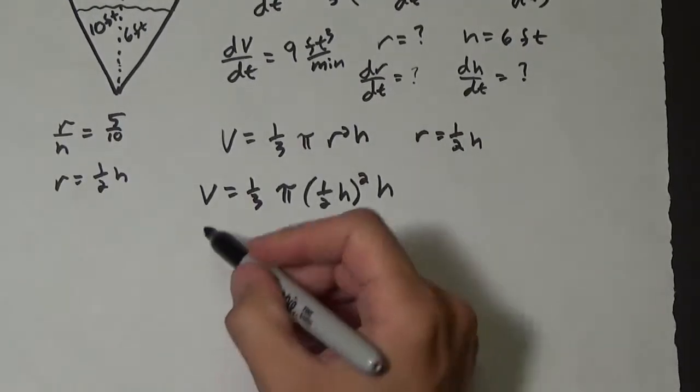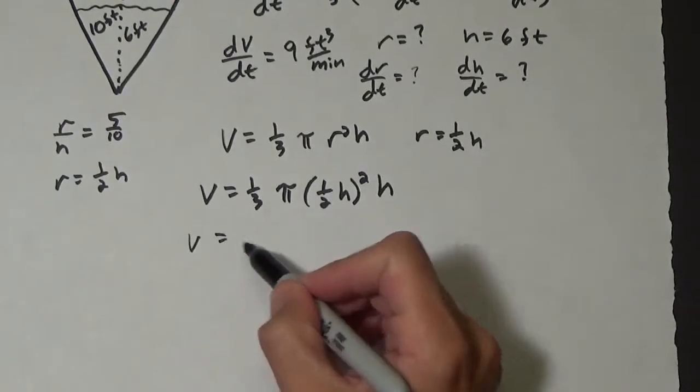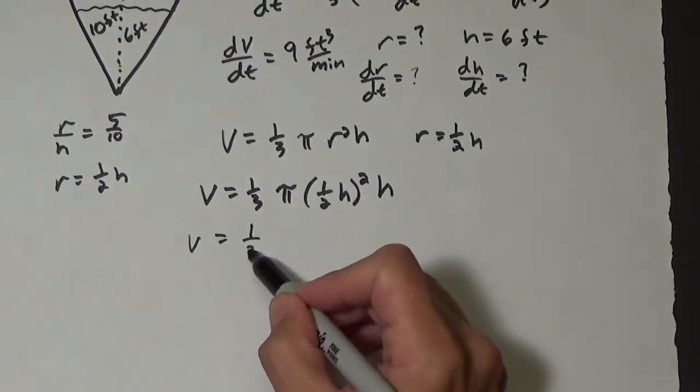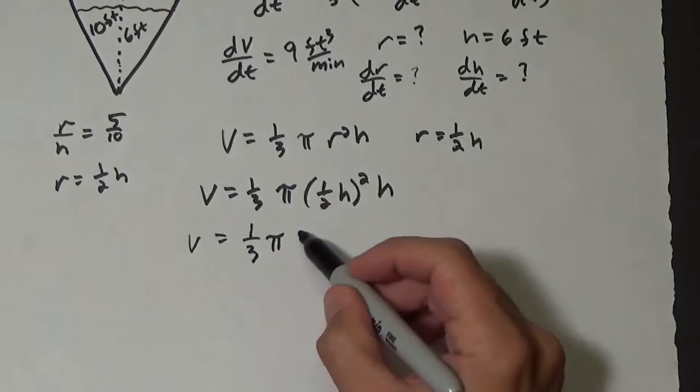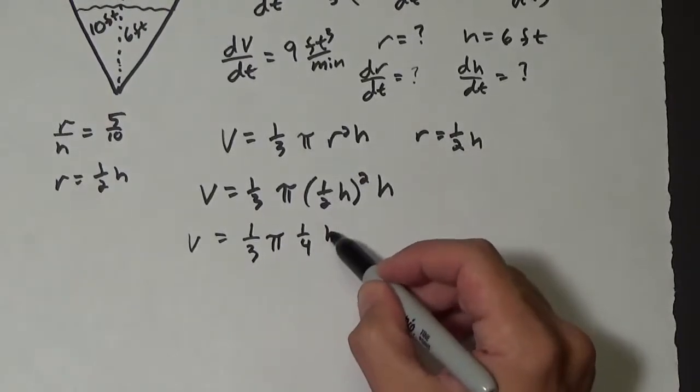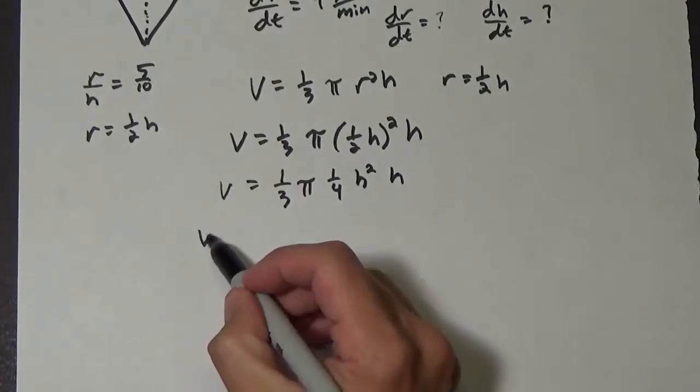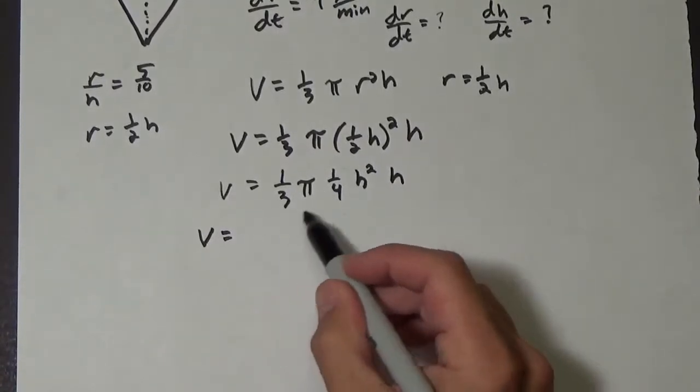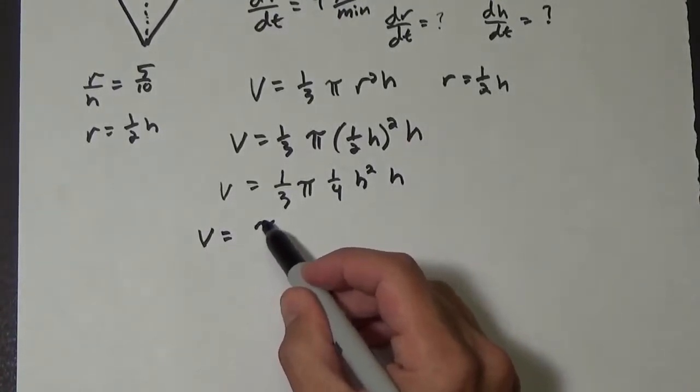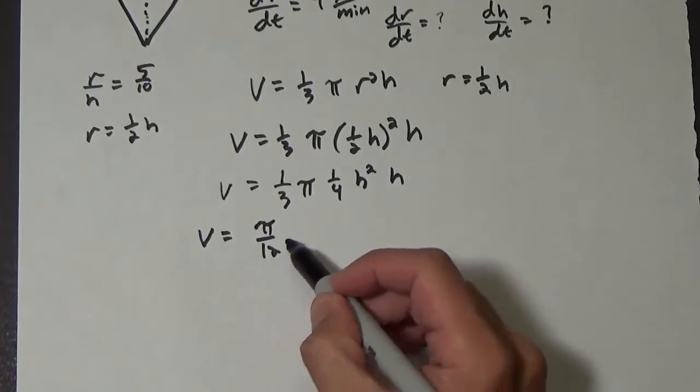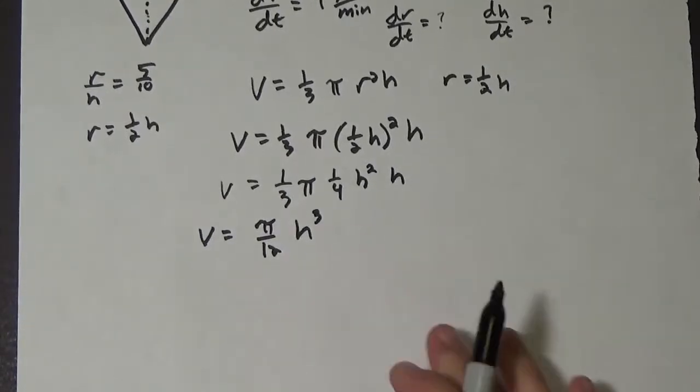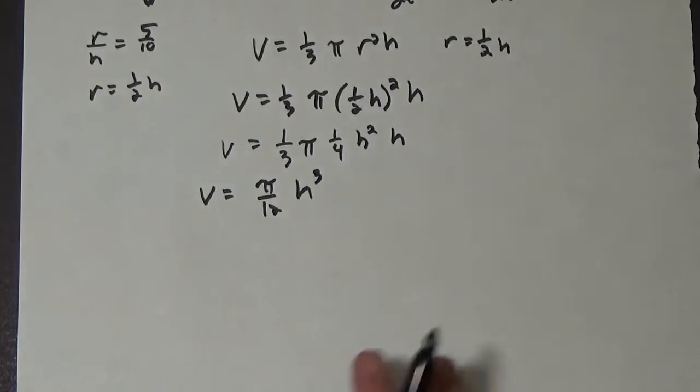But anyways, now let's go ahead and work on this. So our volume, let's clean this up a little bit. We have 1 third pi, so 1 half squared is 1 fourth h squared times h. So our volume is now, what is it, pi over 12 h cubed, and this is gonna be much easier to work with.